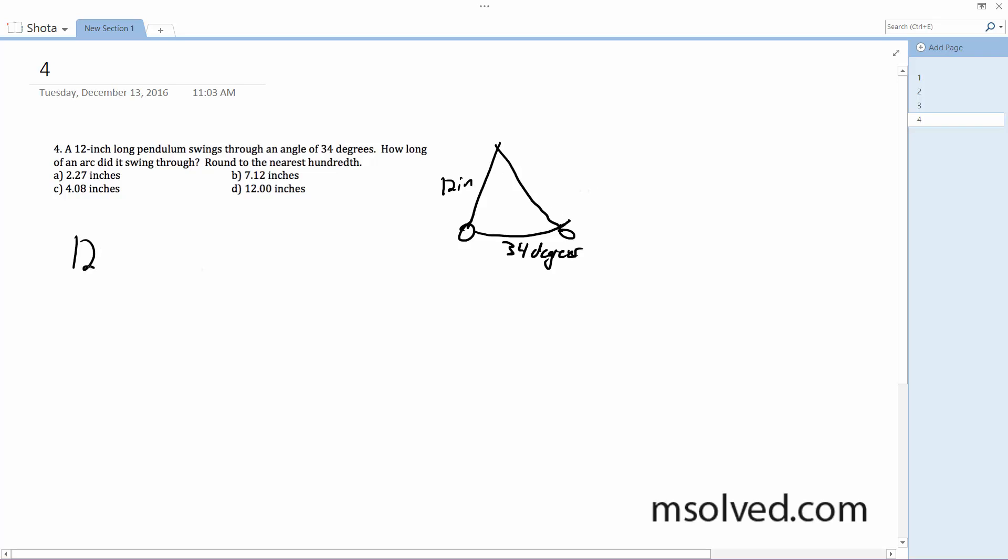So this is just going to be 12. So it's going to be R times pi over 180. Well, that's our conversion for degrees to radians times 34.